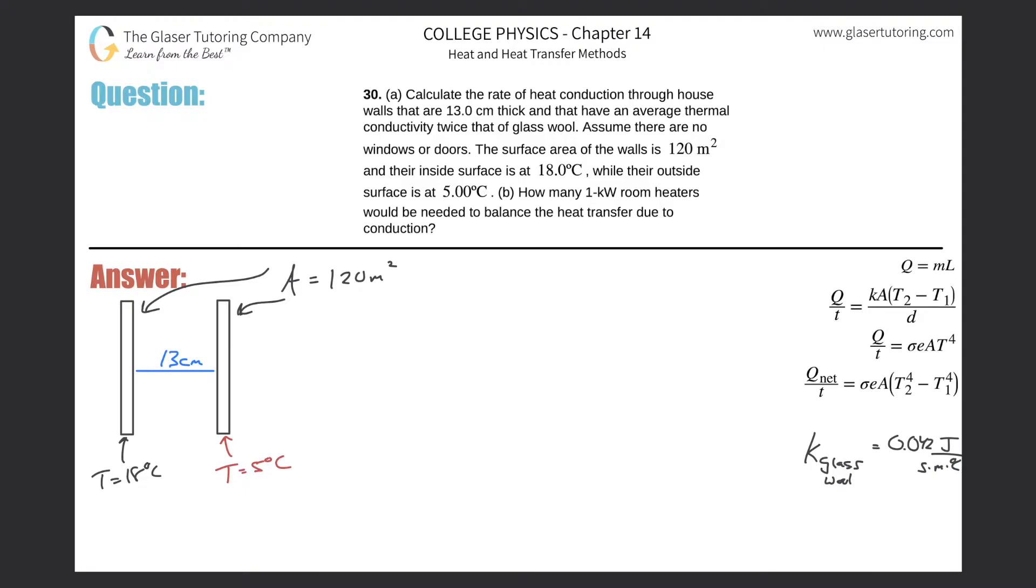Number 30, letter A. Calculate the rate of heat conduction through house walls that are 13 centimeters thick and have an average thermal conductivity twice that of glass wool. Assume there are no windows or doors. The surface area of the walls is 120 meters squared, and their inside surface is at 18 degrees Celsius, while the outside surface is at 5 degrees Celsius.